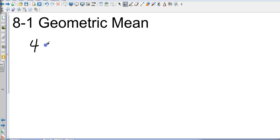So I've got 4 and 10, and I want to find their geometric mean. Their geometric mean, which is going to be represented by x, is equal to the square root of their product. So the square root of 4 times 10, which is going to be the square root of 40.